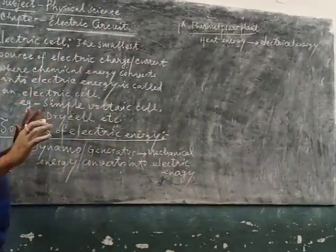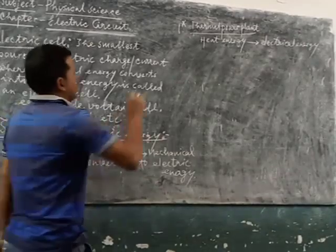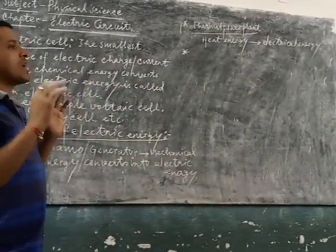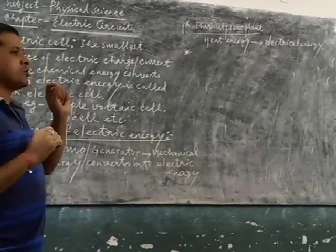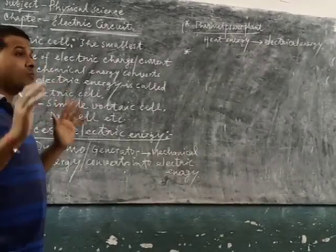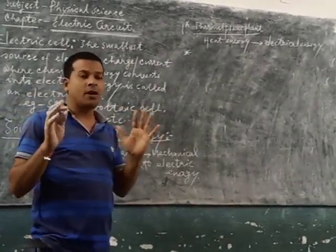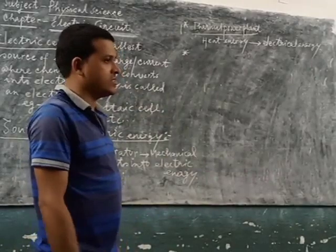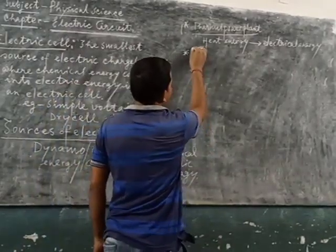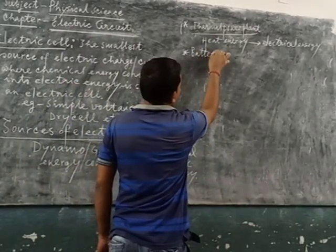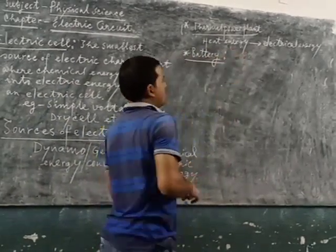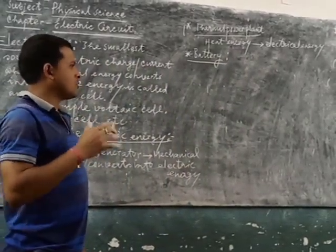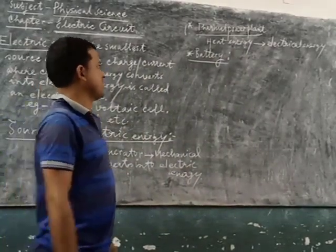These are the different forms of sources of electrical energy. In case of small electrical devices, household purposes, or to run vehicles, a single small electric cell is not sufficient. That is why a number of electric cells are arranged one by one together so that they can produce more amount of electric energy. This arrangement is called a battery.